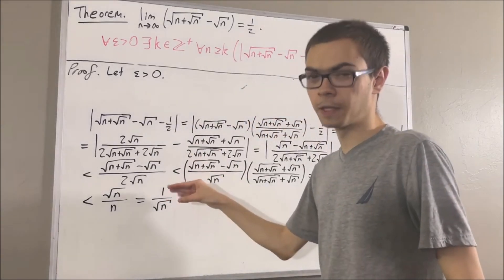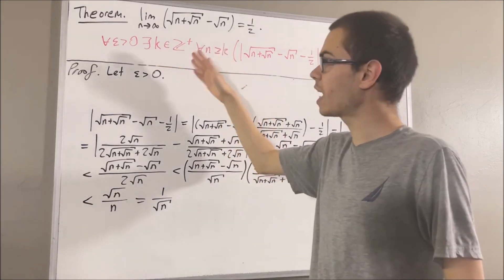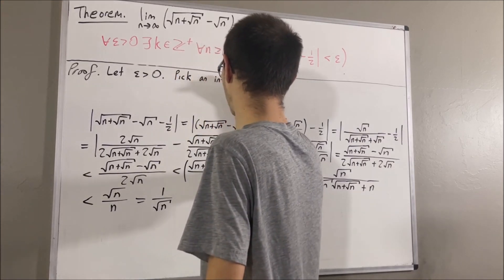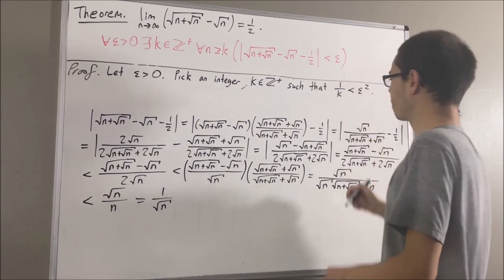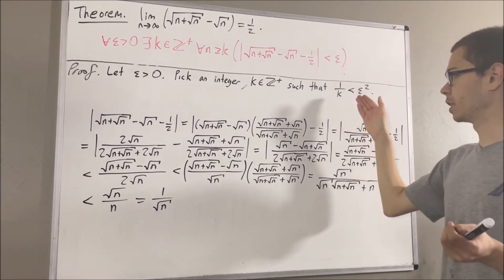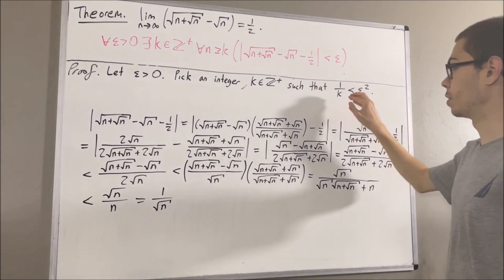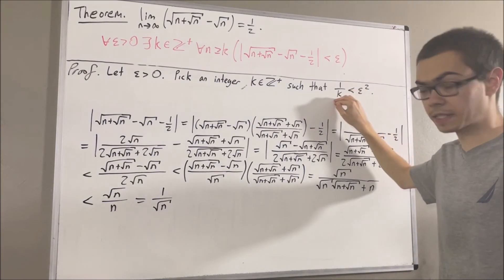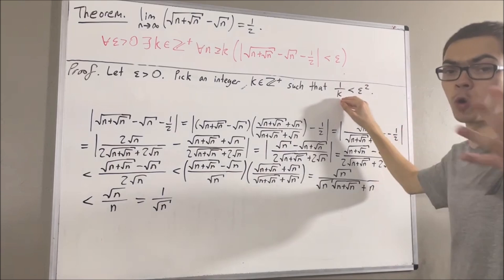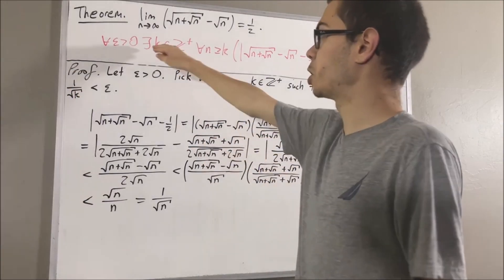This looks pretty simple to work with. Now we can figure out what to choose k to be. It's going to be nice if we choose k so that 1 over k is less than epsilon squared. It makes sense that we should expect some positive integer k to satisfy this inequality. Formally, the idea used here is called the Archimedean property. But now that we've done that, we know that since these quantities are both positive, the square root of 1 over k — which is 1 over the square root of k — must be less than the square root of epsilon squared, which is just epsilon. So we've chosen a value for k.